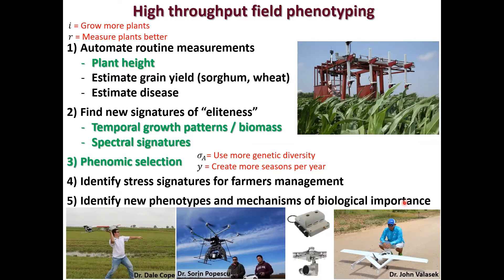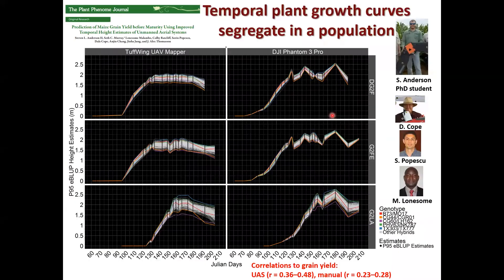This moves us into the most exciting area, which is phenomic selection. Phenomic selection is based on the concept of genomic selection, except using random phenotypic features instead of random genetic markers — it's a totally different way to think about high-throughput field phenotyping. All three of these components will be useful for identifying stress signatures for farmers to better manage their crop, and I'm really interested in identifying new phenotypes or mechanisms of biological importance that were previously unknown. I'll show you an example of that today.